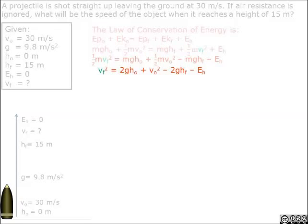we should come to a result of square root of 2 times gravity times initial height plus initial velocity squared minus 2 times gravity times the final height minus heat energy. Now we can plug in all the numbers.